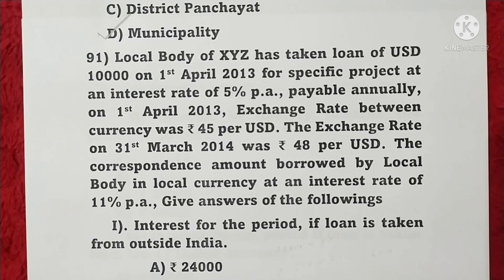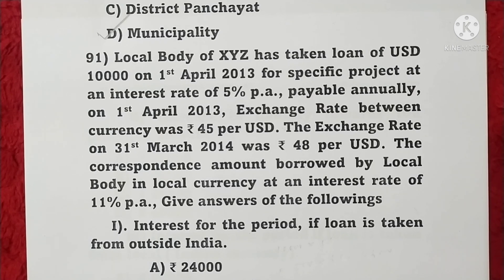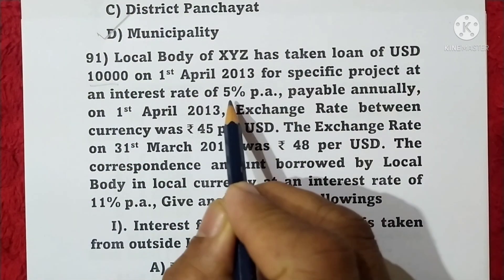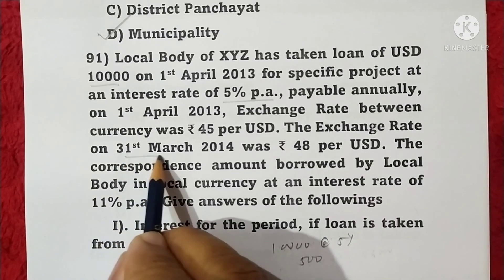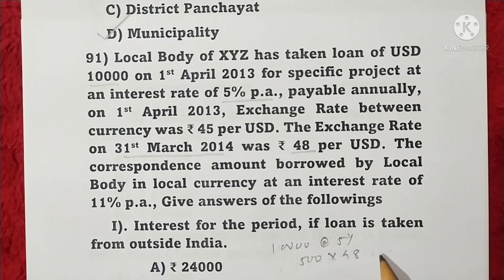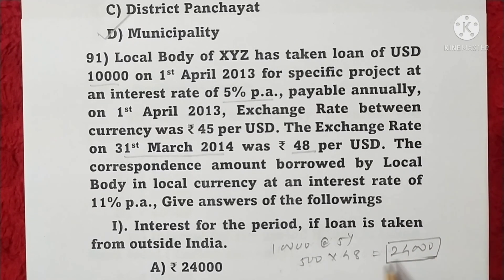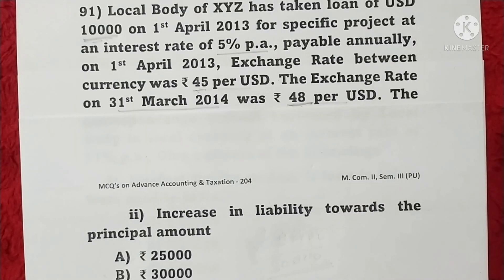Question 91: A local body has taken a loan of USD 10,000 on 1st April 2013 at 5% interest, with exchange rate at borrowing being ₹45 per USD and on 31st March 2014 being ₹48 per USD. First: Interest for the period if loan is taken from outside India — 10,000 × 5% = 500 USD × ₹48 = ₹24,000 — option A is correct. Second: Increase in principal amount — difference in exchange rate is ₹3 per dollar × 10,000 = ₹30,000 — option B is correct.